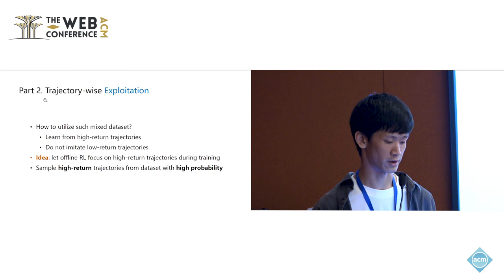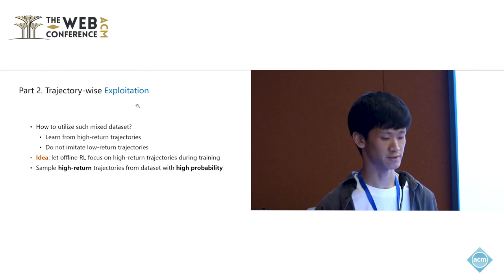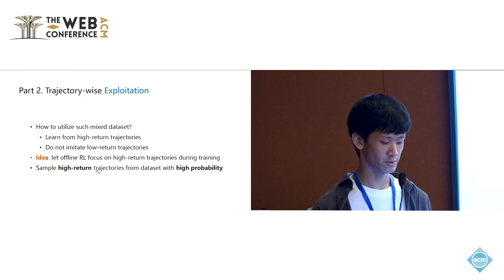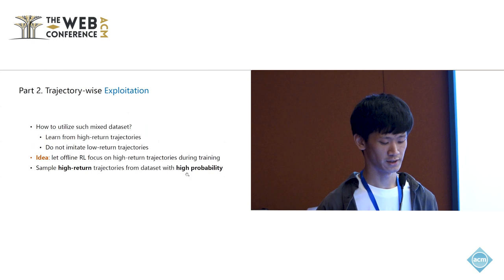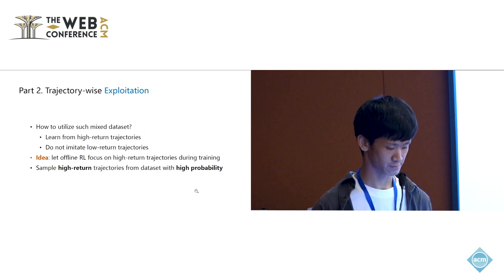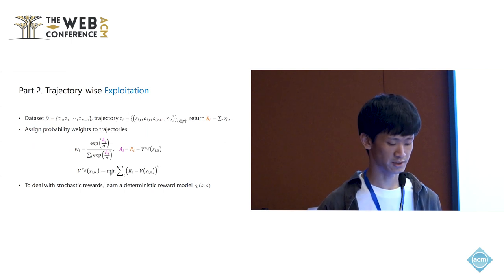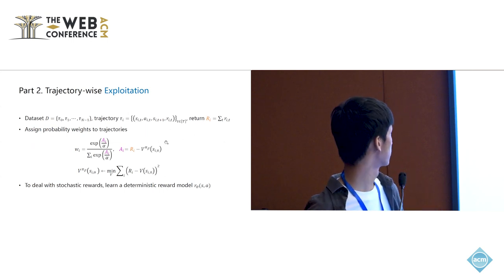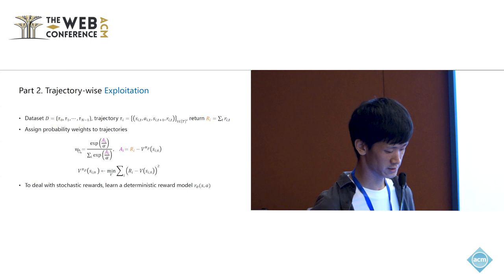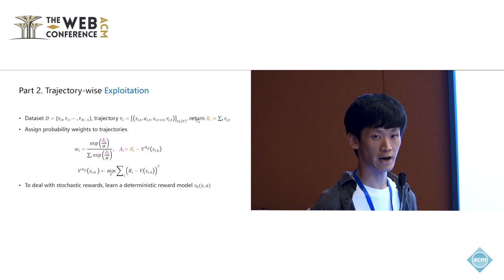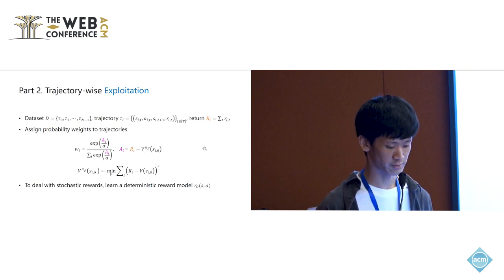We can actually let the offline RL algorithm to focus more on the high return trajectories during training. And that is the idea of our trajectory-wise exploitation method. We will sample high return trajectories from the dataset with higher probability. For a dataset consisting of n trajectories, and each trajectory has a return r_i, we will assign probability weight w_i to the i-th trajectory. And for larger r_i, this probability will be higher. Details can be found in our paper.